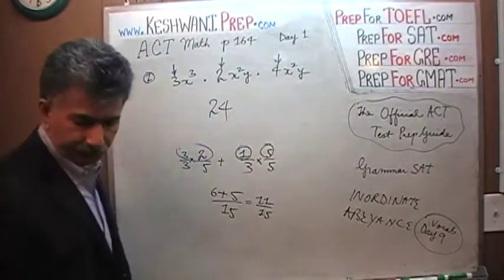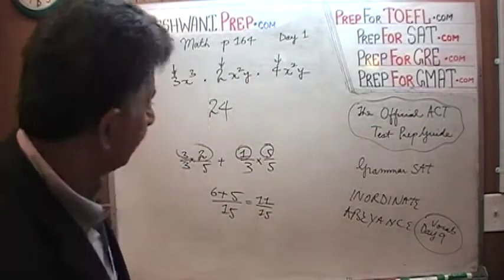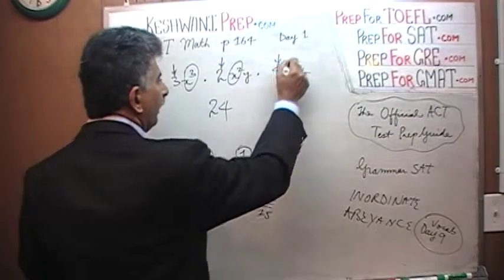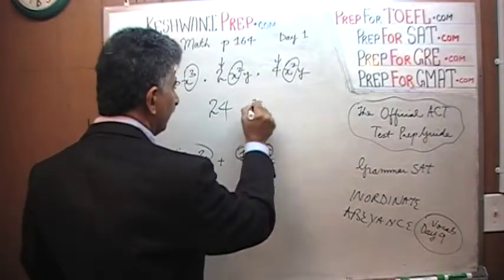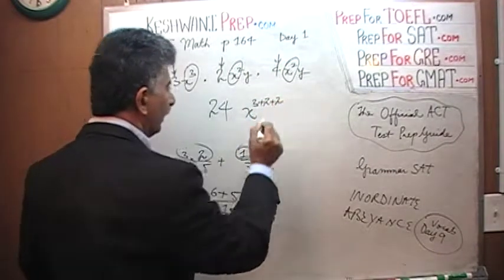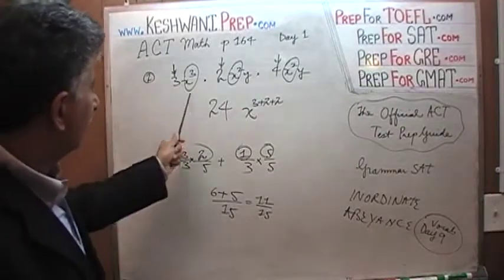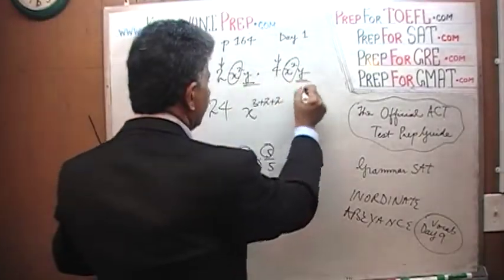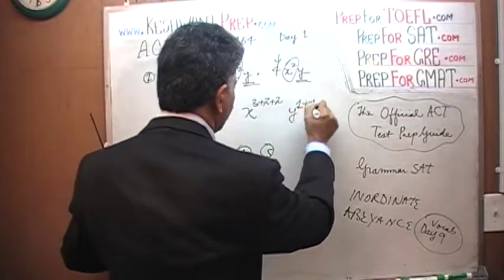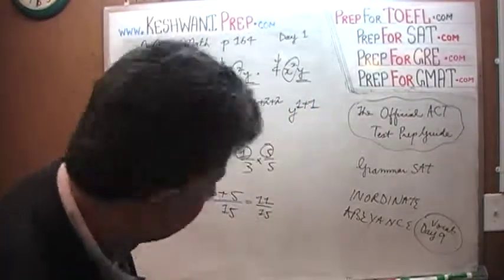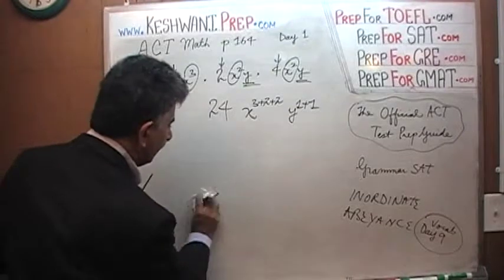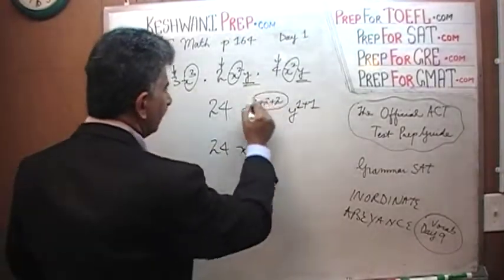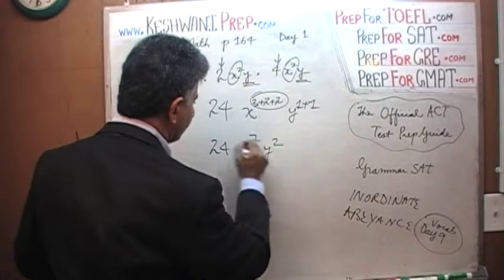Then we have x³ times x² times x² — we add exponents when multiplying: 3 + 2 + 2 = 7, giving x⁷. We also have y times y, which is y¹⁺¹ = y². The final simplified expression is 24x⁷y².